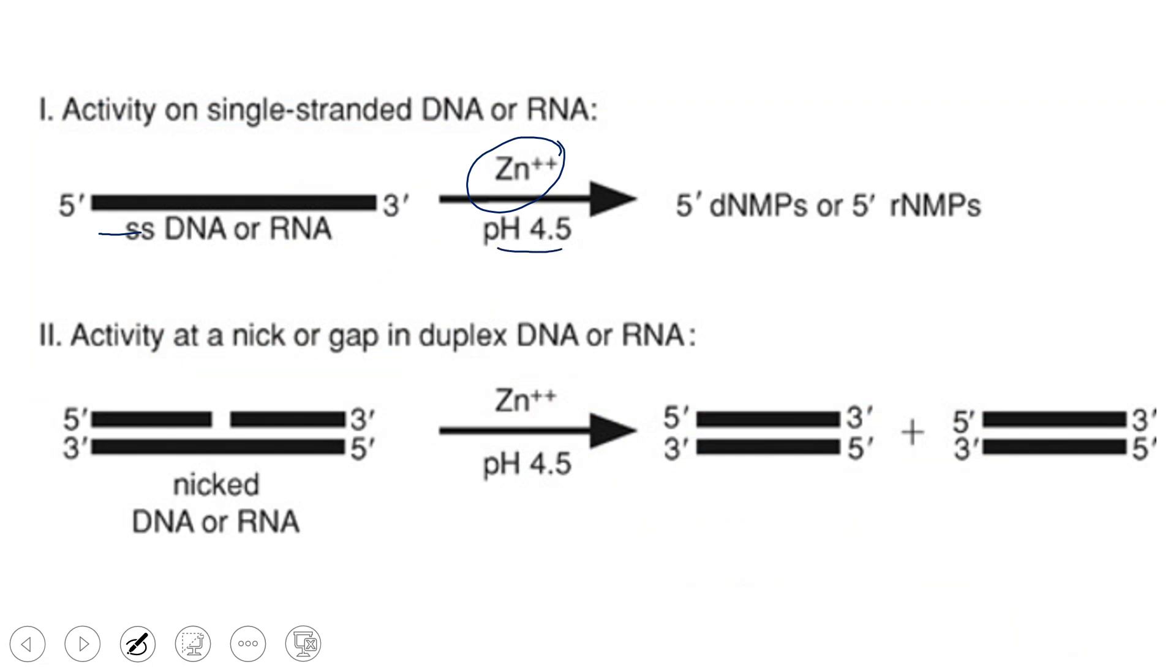If it is single-stranded, in the presence of zinc it works in the acidic condition. The optimum pH is 4.5 where it removes nucleotides. If we are having double-stranded like this one where nick will be there, at the nicking region it is going to work on the double-stranded DNA and ultimately DNA will be fragmented into two pieces.